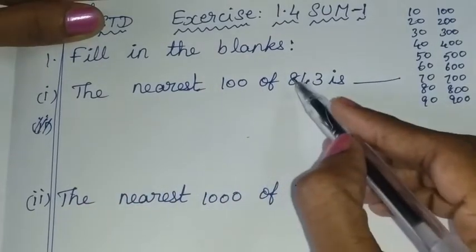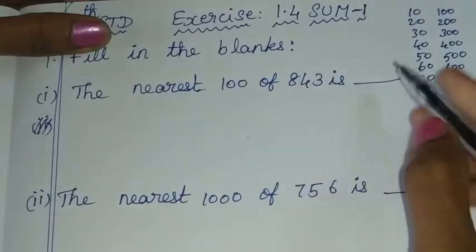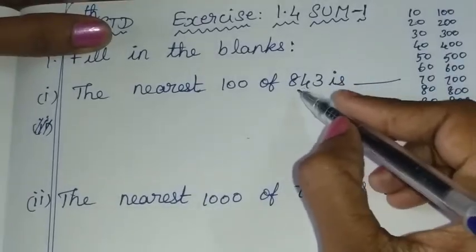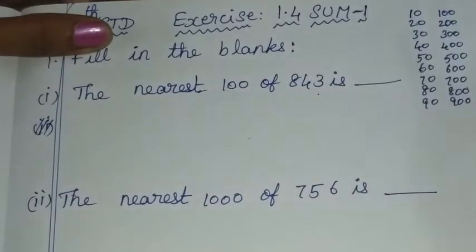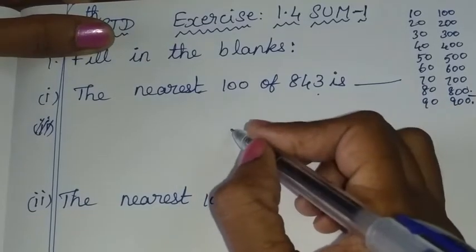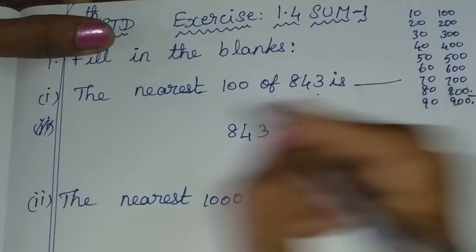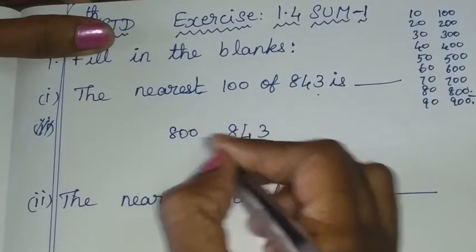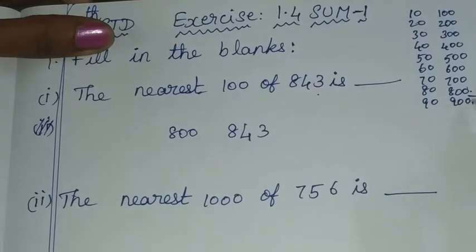The nearest hundred of 843 is — this is how we find the nearest round of 100. If we look at the hundreds, we have 100, 200... and we identify the nearest hundred for 843.